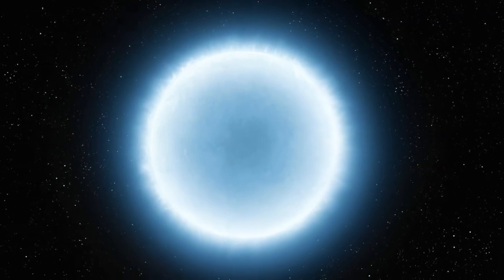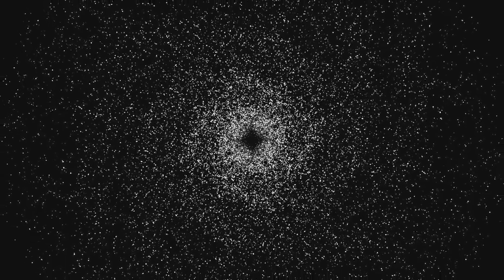Consider a star like our sun. Once it's depleted its nuclear fuel, it'll shed its outer layers and leave behind a dense core, known as a white dwarf. This stellar corpse then cools and fades over billions of years.